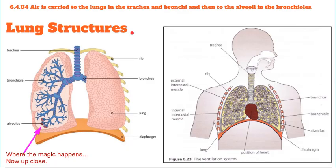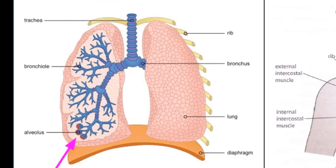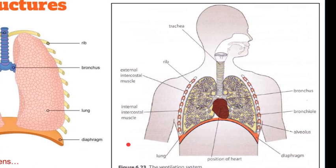It's important to understand some of the lung structures. From largest to smallest, we go: trachea, down into the bronchus, then the bronchioles, and then down into the alveolus — or alveoli, which is the plural. There are also different muscles visible in the image on the right. Specifically, we have a large muscle called the diaphragm, which helps to relax and pull the lungs down, and the intercostal muscles — an external and an internal set.